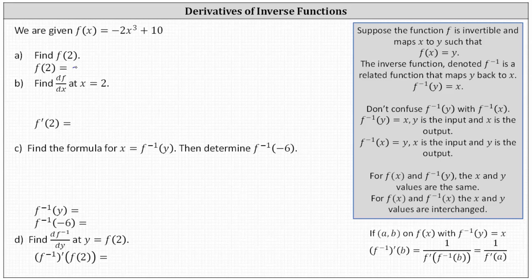f of two is equal to negative two times the cube of two plus 10. The cube of two is eight. Eight times negative two is negative 16, and negative 16 plus 10 is equal to negative six.